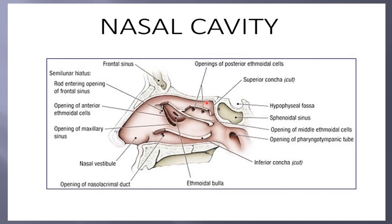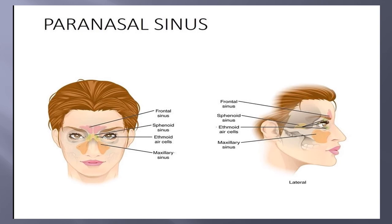The paranasal sinuses are a group of four paired air-filled spaces around the nasal cavity. The maxillary sinus is under the eye, the ethmoid sinus is between the eyes, the frontal sinus is above the eye, and the sphenoid sinus is behind the eye. You can see the anterior and lateral views of the paranasal sinuses.